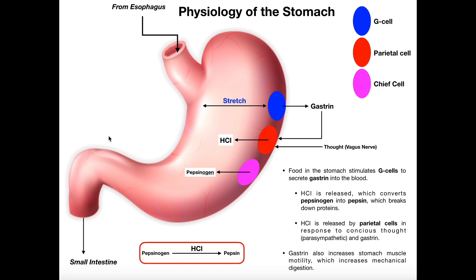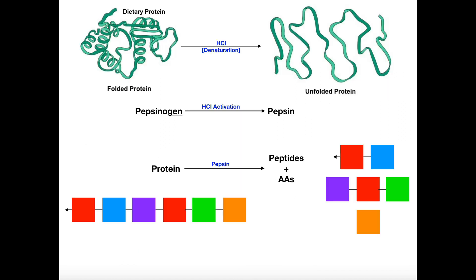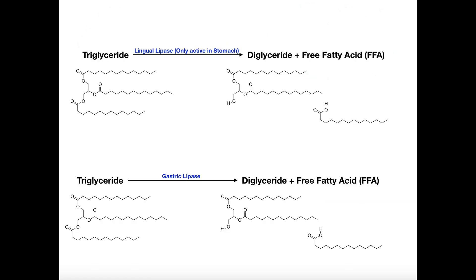When I talked about the chemical digestion in the stomach, it really just focused on the proteins. It's true that pepsin is very important in the degradation of proteins in the stomach. I got a little carried away with that and forgot to mention that we actually have some other digestion that occurs in the stomach, and that is through the activity of two lipases.